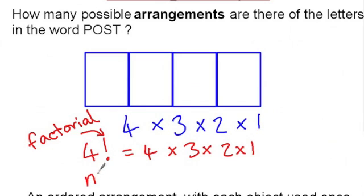And we define n factorial as n multiplied by n minus one, etc. until we get down to one.